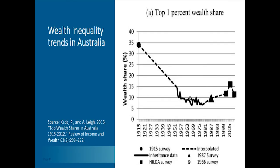On wealth inequality, it's harder to find data than on income inequality, but you also see a U-shape with a low point in the 60s and 70s and somewhat of an increase since then.